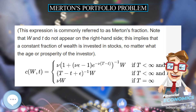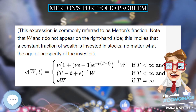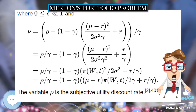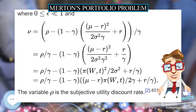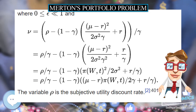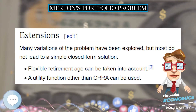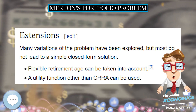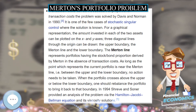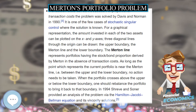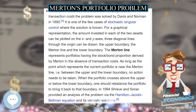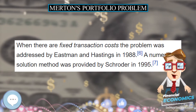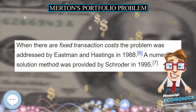Consumption cannot be negative: c(t) is greater than or equal to 0, while pi(t) is unrestricted, i.e. borrowing or shorting stocks is allowed. Investment opportunities are assumed constant, i.e. r, mu, and sigma are known and constant in this 1969 version of the model, although Merton allowed them to change in his intertemporal CAPM of 1973.